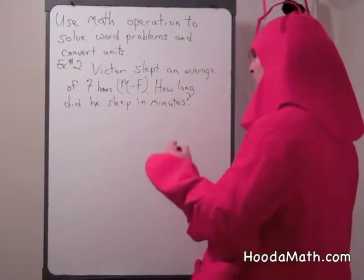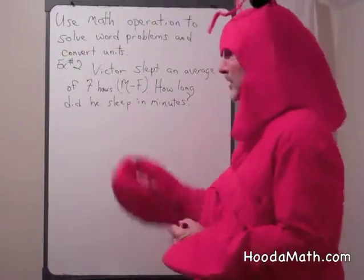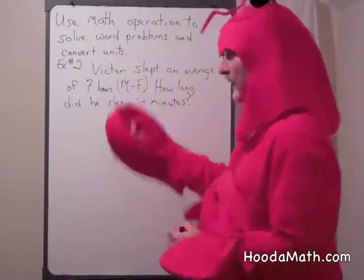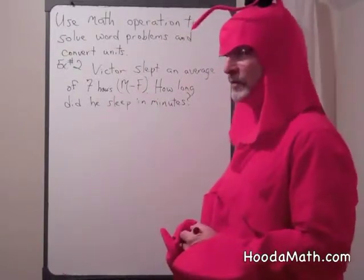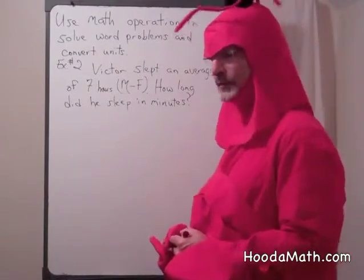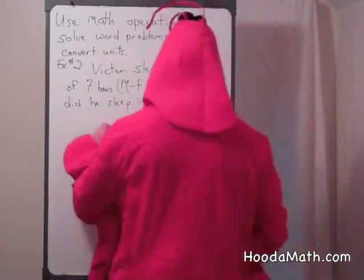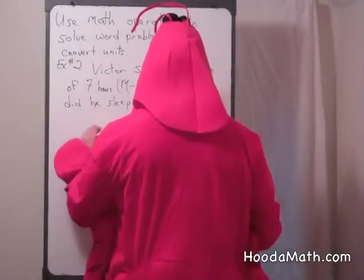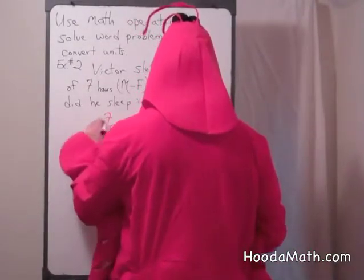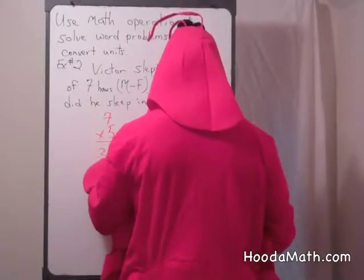So, if there's five days — Monday, Tuesday, Wednesday, Thursday, Friday — and he averaged seven hours of sleep, what would be the total amount of hours? You can multiply five times seven and we get 35 hours.